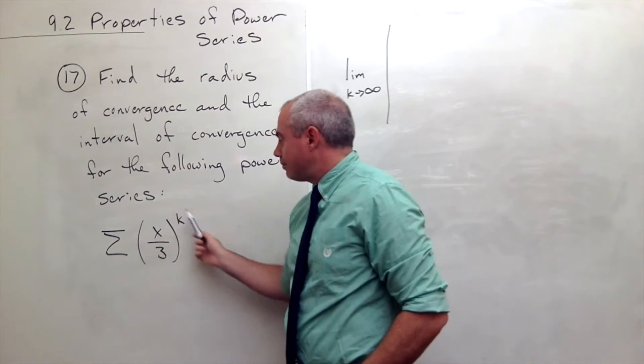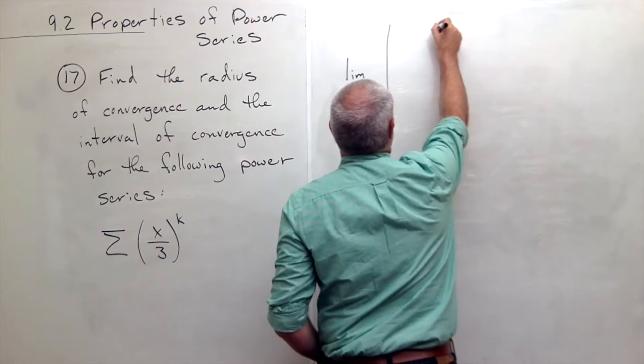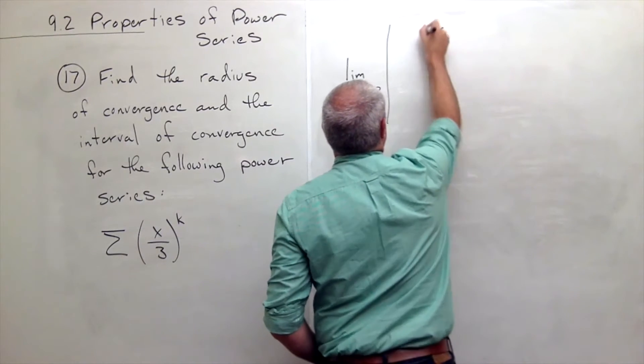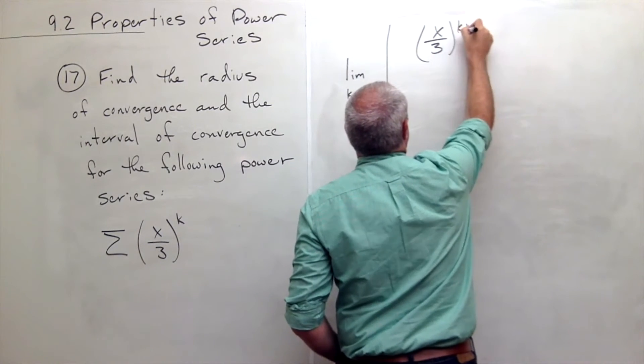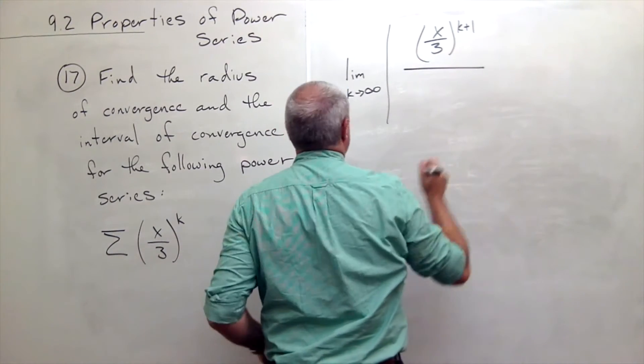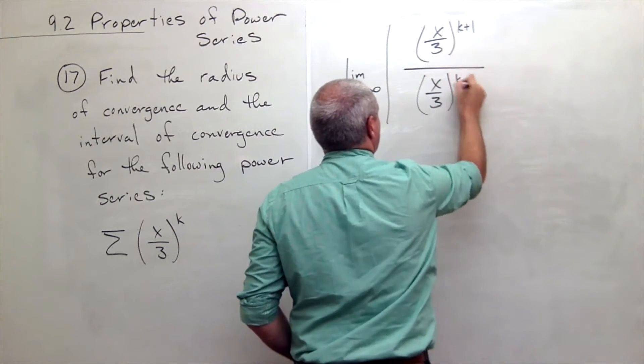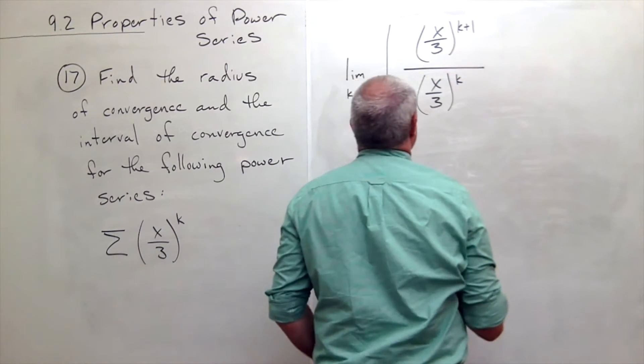Then we put in the (k+1)st term of this sequence on top, so I get (x/3) to the (k+1) power, and on the bottom I put in the kth term, which is (x/3) to the kth power.